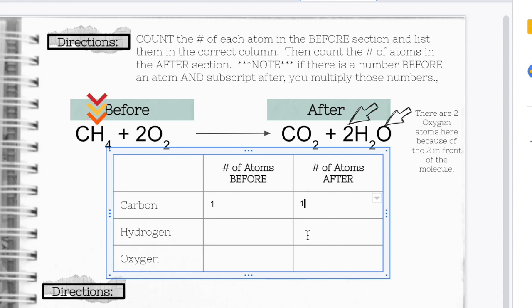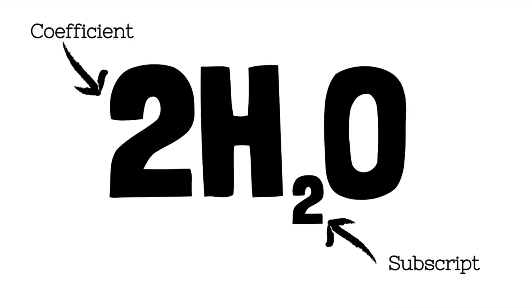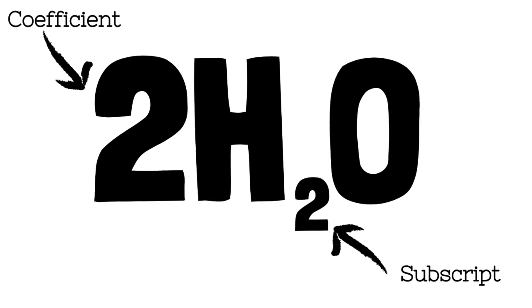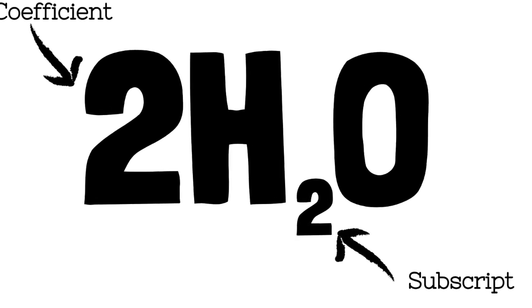After this, you want to continue looking at each atom in the before and the after columns and then record them in the chart. One thing to keep in mind as you're counting the number of atoms are the coefficients and the subscripts that we see in this chemical equation.